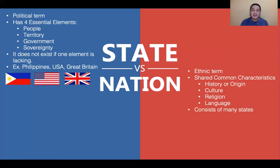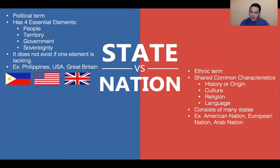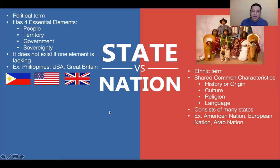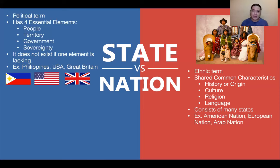A nation consists of many states — it's not just one state alone. Good examples are the American nation, European nation, and Arab nation. For instance, the first Americans — the Indians — were composed of different nations. Another example is the ASEAN nation: the Philippines is part of the ASEAN nation because we belong to one origin, the Malayan race, and we belong to one continent, Asia.